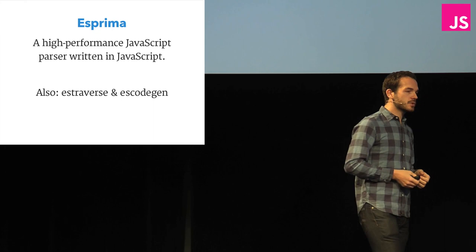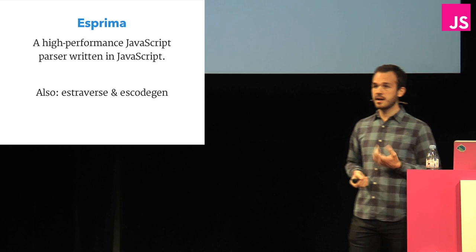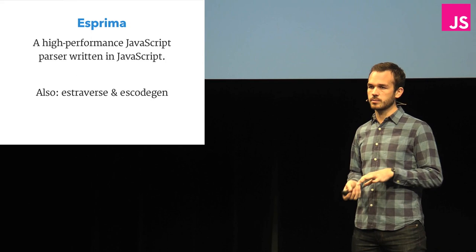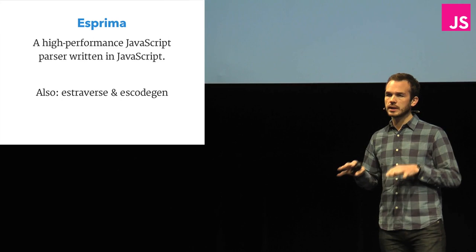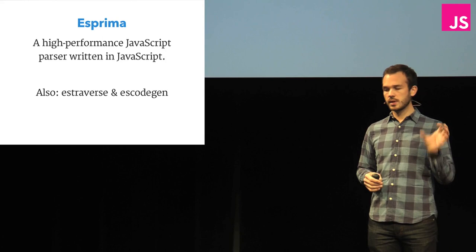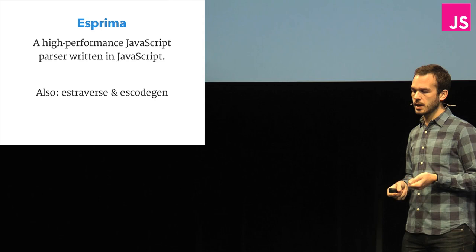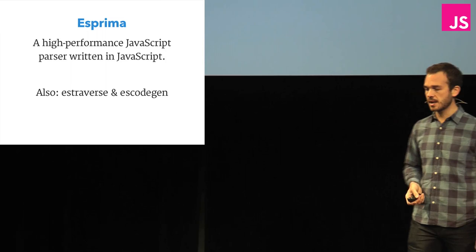I'm going to show you some examples of using a JavaScript compiler called Esprima. Esprima is a nice, simple, fast compiler for JavaScript, but it's also written in JavaScript, which is kind of cool. Esprima also has two related modules: es-traverse and es-code-gen. es-traverse is a module for traversing the parse trees generated by Esprima, and es-code-gen is for doing code generation from the parse trees. We're going to use both of these in the examples.